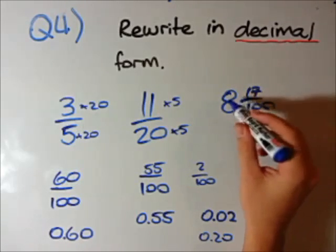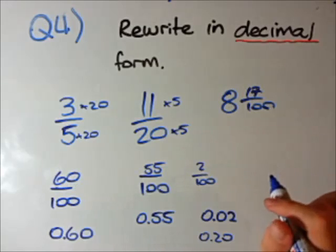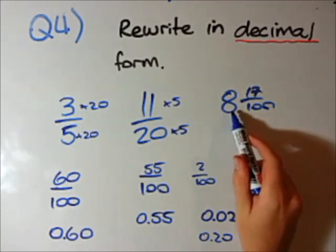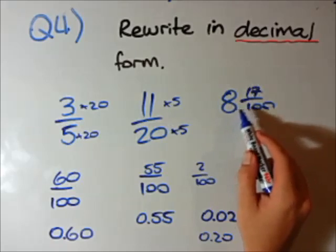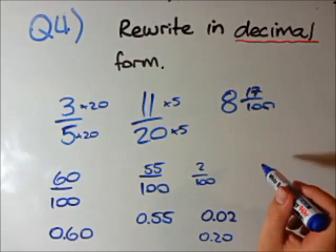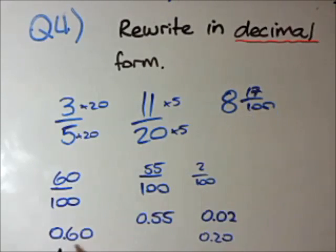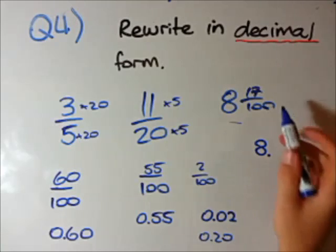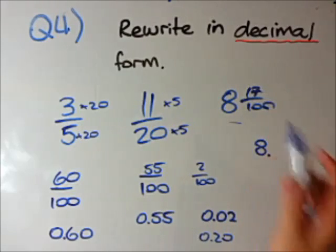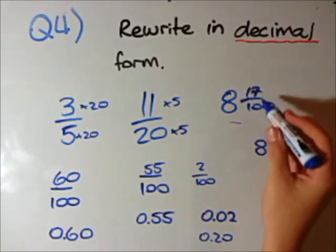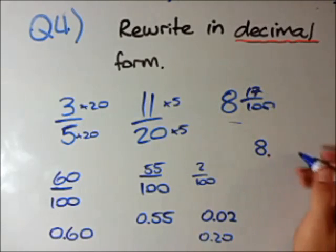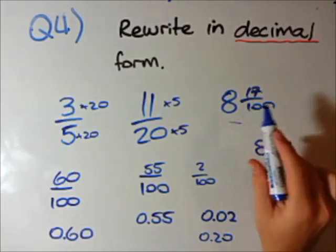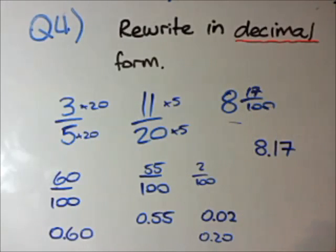The last one is a mixed number: 8 and 17 over 100. Since it already has 8 full numbers, you know it's bigger than 1. The fraction part, 17 over 100, is already over 100, so we can write the answer straight away as 8.17.